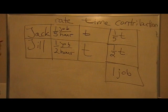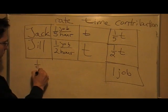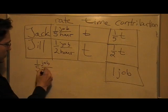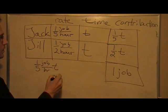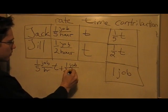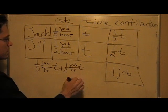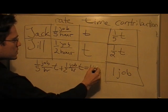Now, I will write this using units, as follows. One-fifth job per hour from Jack times the time he works, plus one-half job per hour times the time Jill works, which is t. They work the same amount of time. And this whole thing has to be equal to one job.